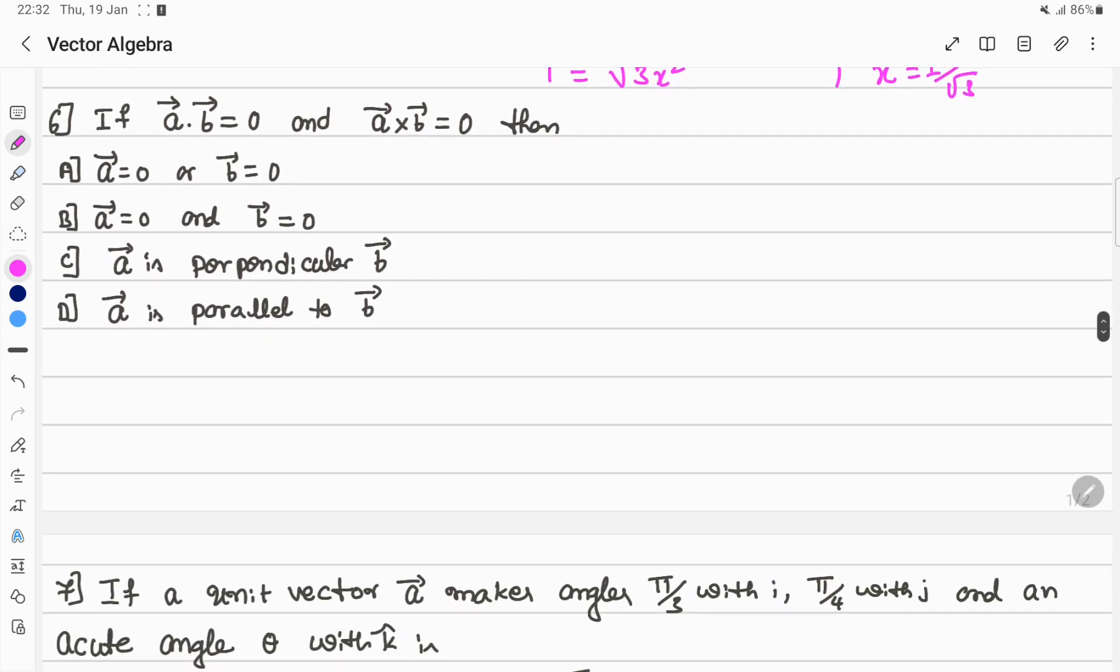Sixth question: if A dot B equals 0 and A cross B equals 0, then which is the right option? Look at here: if A is perpendicular to B, then A dot B equals 0. If A is parallel to B, then A cross B equals 0.